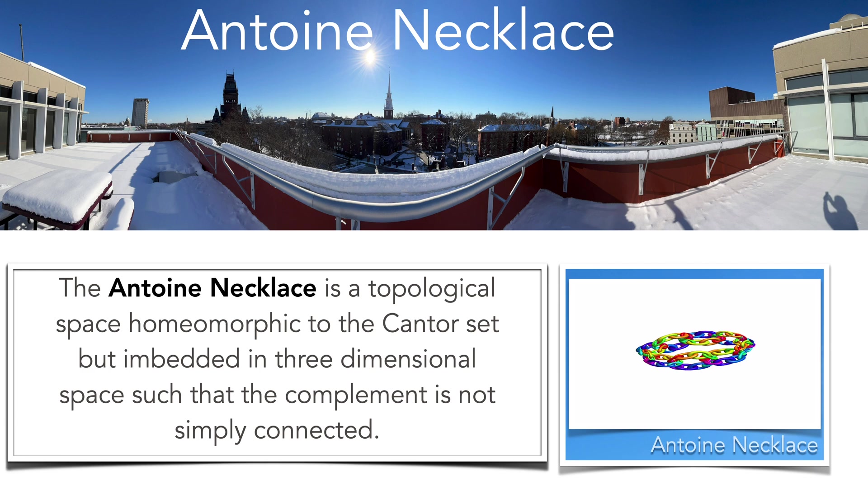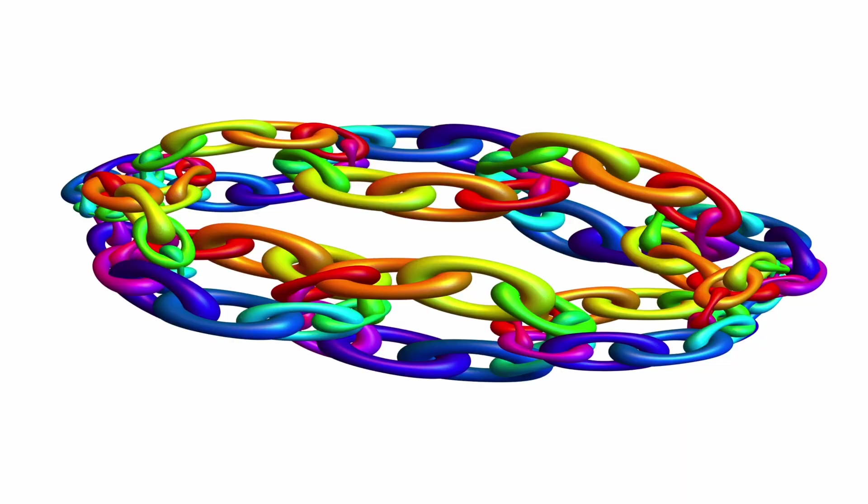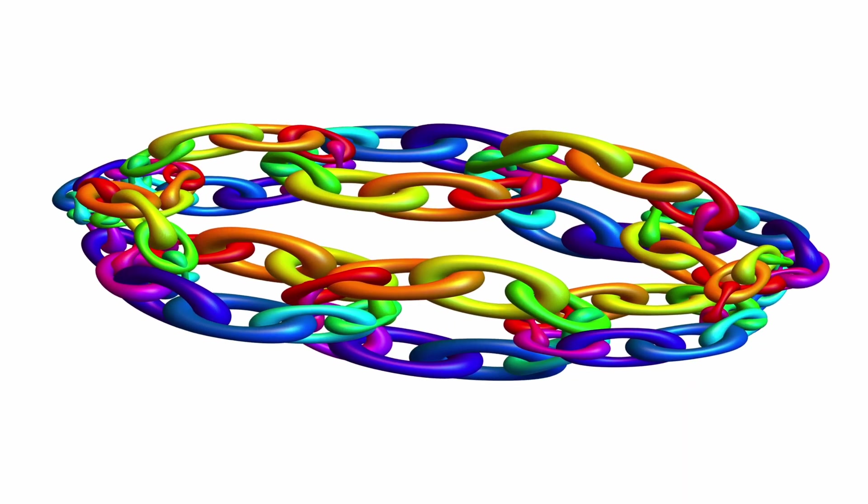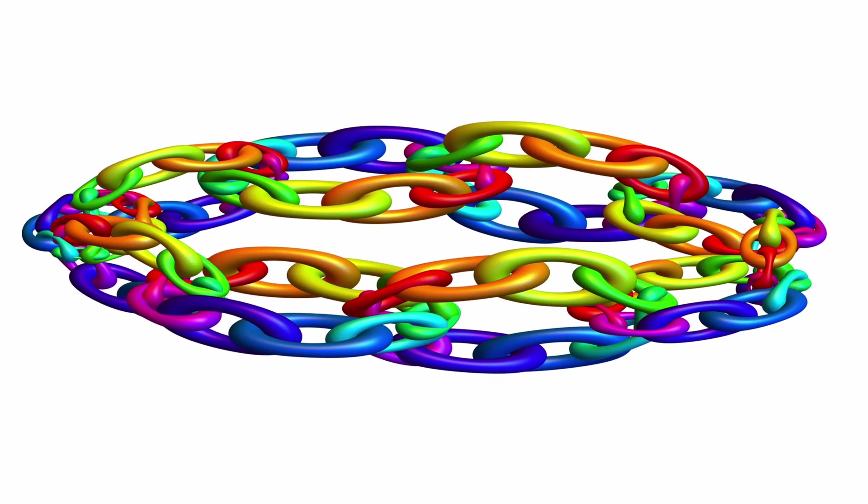The Cantor middle third set is a compact topological space which is completely disconnected. In 3D, one can draw it in such a way that the complement is complicated. Construction is recursive.